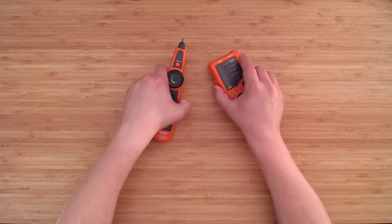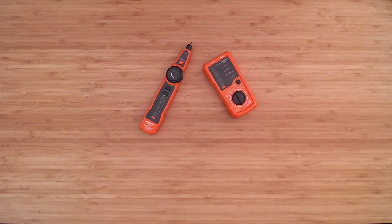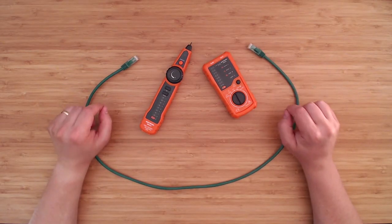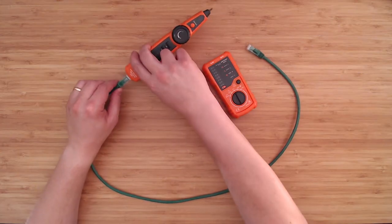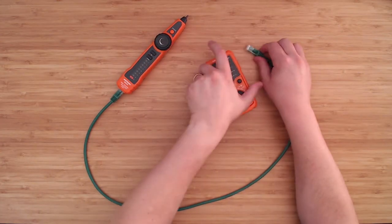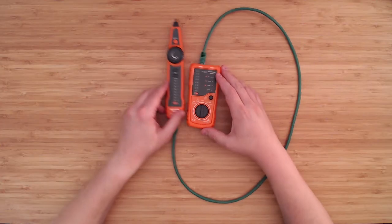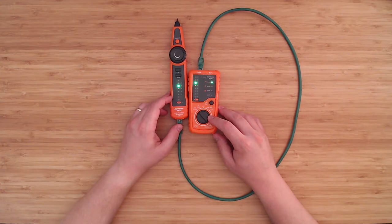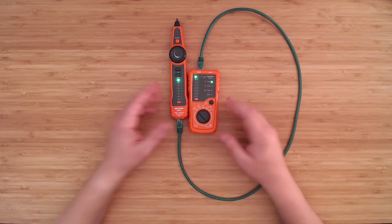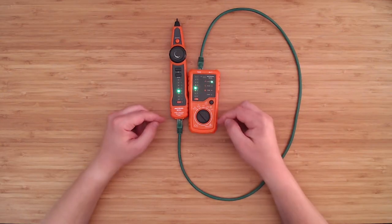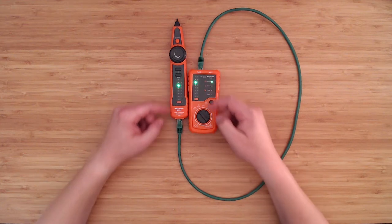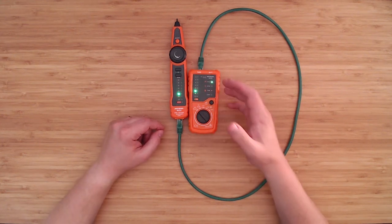First demonstration: a cable test, and we'll start with patch cords. This one is a brand new Cat6 patch cord right out of the bag. Go ahead and plug in both ends to the RJ45 jacks, change the function to network, and press test. And as expected, a good cable. Each of the LEDs lights up in sequence from 1 to 8. That indicates that it's a straight through, and since every LED illuminates, we know that it's a good cable.